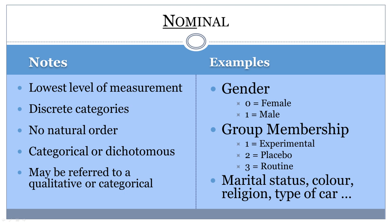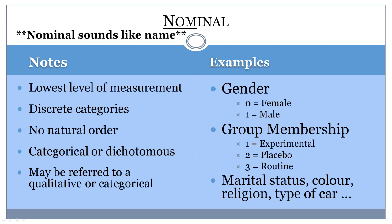For example, if we categorize people by hair color, people with brown hair do not have more or less of a characteristic than those with blonde hair. Nominal sounds like name, so it is easy to remember that at a nominal level you are simply naming categories.